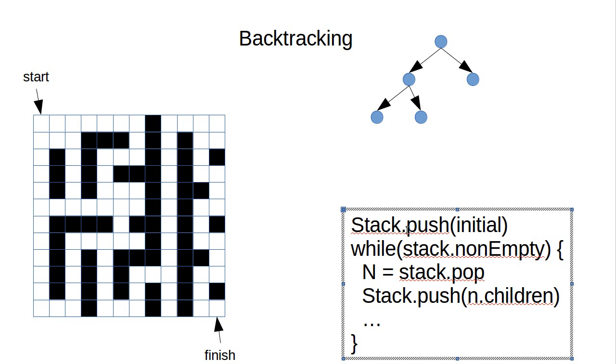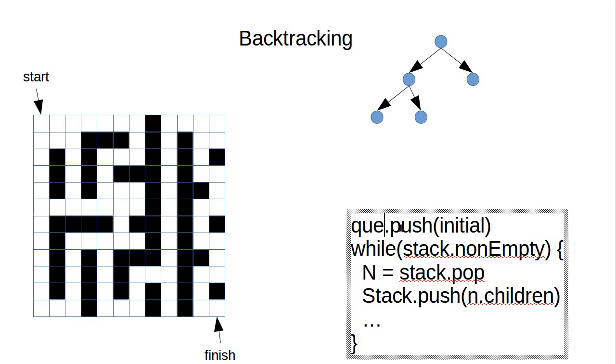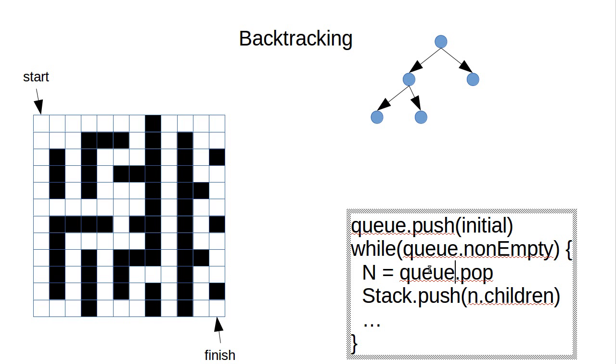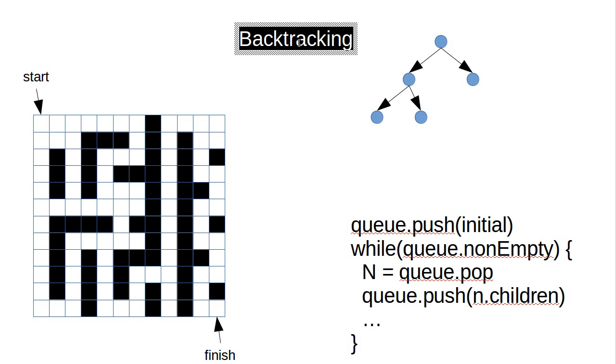What if instead of being a stack though, we change this to a queue and change pushes and pops to whatever term you like for adding things and removing things on queues. Then what happens? Well, this same type of algorithm is no longer going depth first. Instead, this would be a breadth first traversal. And that's something we don't refer to as backtracking in the algorithms terminology. This is called branch and bound.